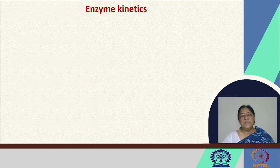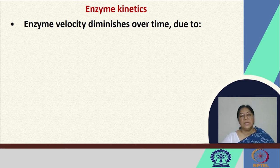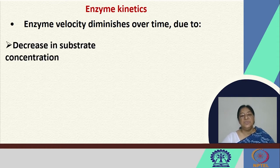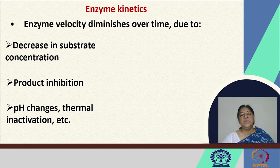In enzyme kinetics, we look at the velocity of the enzyme-substrate reaction as it proceeds, where we have the formation of the enzyme-substrate complex leading to product formation. The velocity of this reaction decreases if there is a decrease in substrate concentration, product inhibition occurs, pH changes, or thermal inactivation of the enzyme itself, since enzymes work at an optimum temperature and optimum pH.